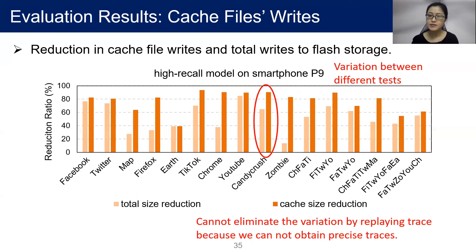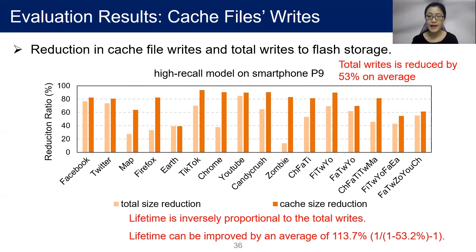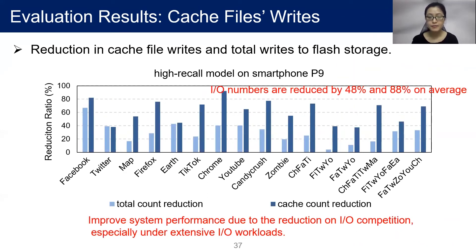We tried to replay traces to eliminate variation; however, we could not obtain precise traces because there is lots of information to collect simultaneously. Therefore, we chose to use real applications for evaluation and conducted many operations to make fair comparisons. From these results, total writes are reduced by 53% on average, thus flash lifetime can be much prolonged — lifetime is inversely proportional to total writes according to previous work. Total write I/O operations can be reduced by 48% on average, so system performance can be much improved due to reduced I/O contention, especially under extensive I/O workloads.